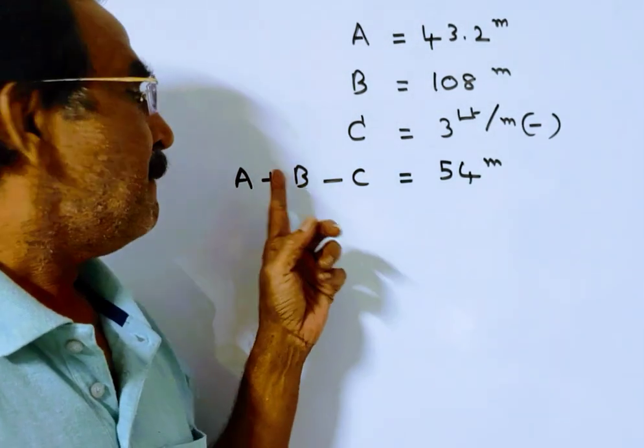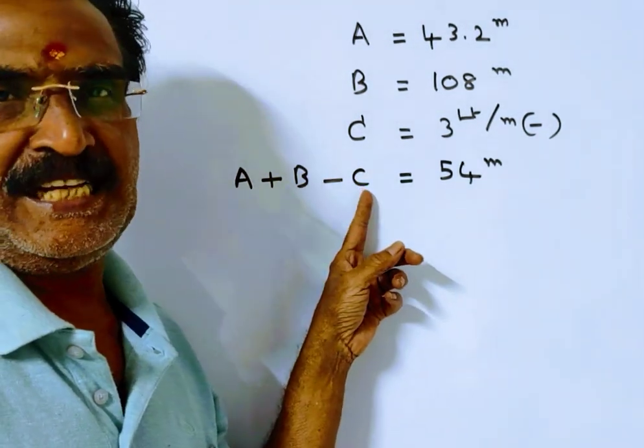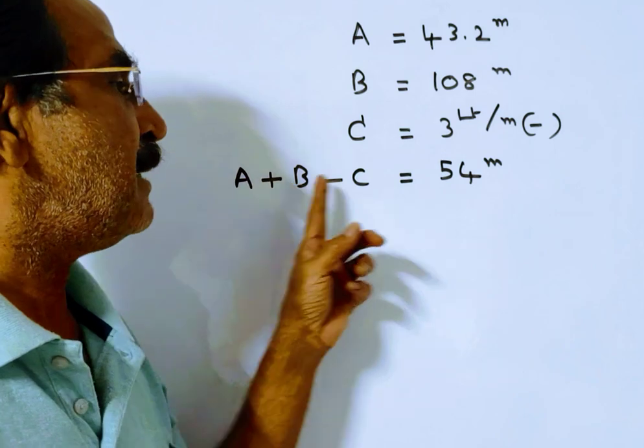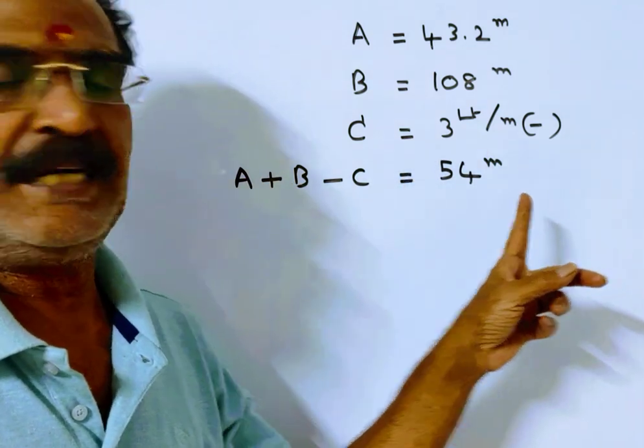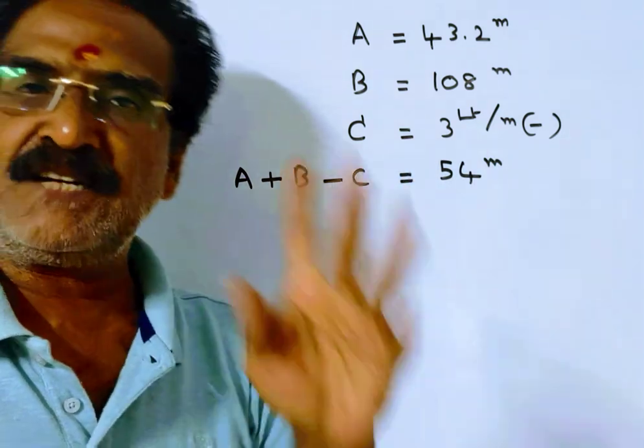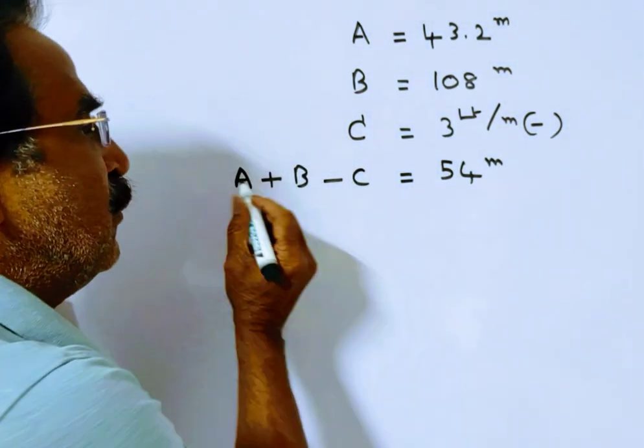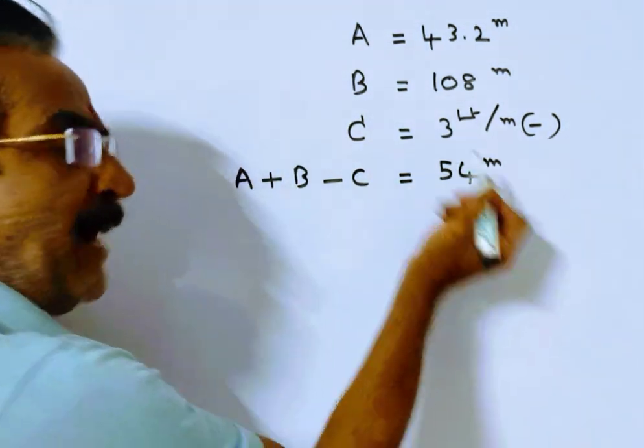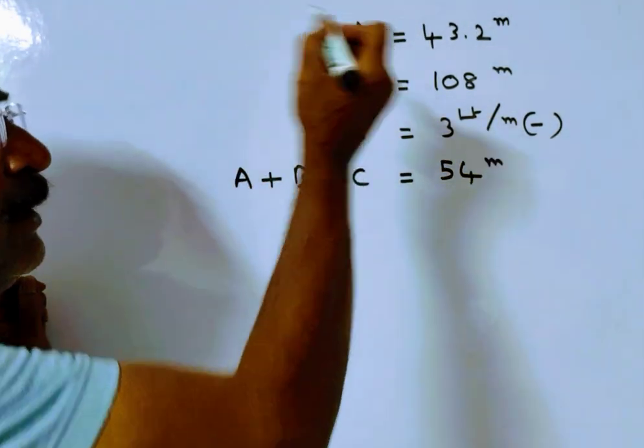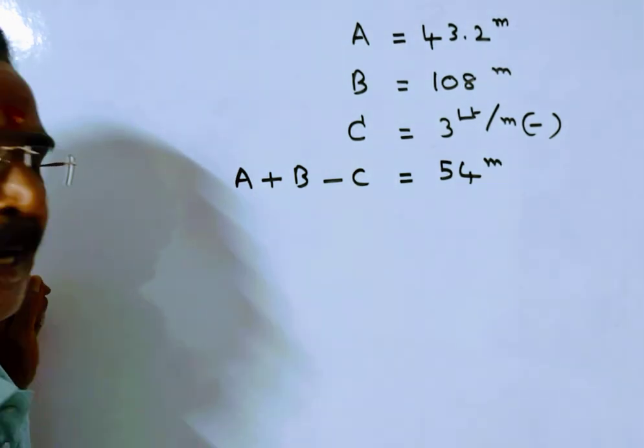It is given A plus B minus C, this is an emptying pipe. A plus B minus C is equal to 54 minutes. So from this equation we can find C. A plus B minus 54 is equal to work done by pipe C.